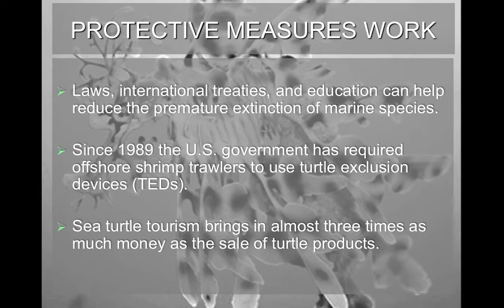The good news is that protective measures do work. The more laws we put in place, the more treaties signed internationally, and the more education and outreach we perform can actually help us reduce and prevent extinction of marine species. Another protective measure is the implementation of turtle exclusion devices — called TEDs — which have been required since 1989 for anyone doing offshore shrimp trawling. They emit a noise that turtles don't like, causing them to migrate away before the shrimp trawler takes in its haul, reducing the number of turtles caught in nets.